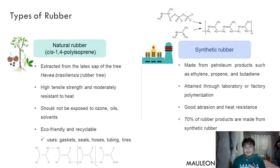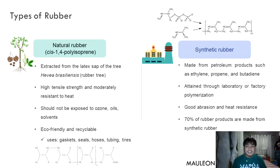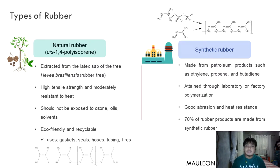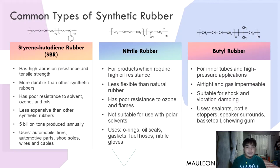Synthetic rubber, on the other hand, is made from petroleum products such as ethylene, propylene, and butadiene, and is attained through laboratory or factory polymerization. It has good abrasion and heat resistance. Because it is easier to produce, it is more commonly used — 70% of rubber products are made from synthetic rubber.